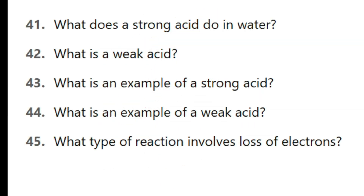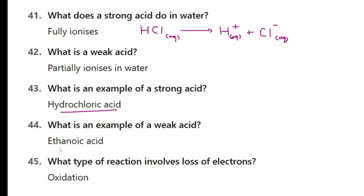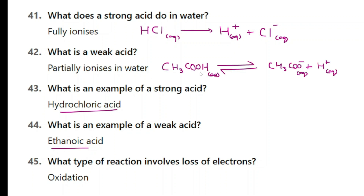Here are the next five questions. Pause the video and do these questions. When you are ready for the answers, press play. What does a strong acid do in water? Fully ionises. For example, hydrochloric acid fully ionises to H+ and Cl−. What is a weak acid? It partially ionises in water. An example of a strong acid is hydrochloric acid; an example of a weak acid is ethanoic acid, where the reaction is reversible and produces fewer H+ ions. What type of reaction involves loss of electrons? Oxidation — using the mnemonic OIL RIG: oxidation is loss of electrons and reduction is gain of electrons.